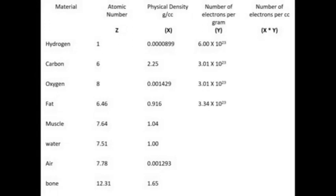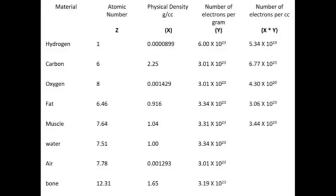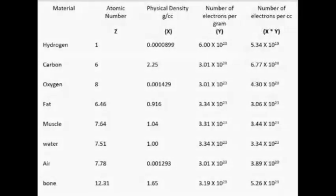However, one cubic centimeter of bone will have more chance of Compton than soft tissue. This is because more electrons per cubic centimeter are available in bone due to higher physical density. Probability of Compton effect increases with electron density or number of electrons per cc.